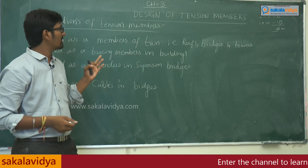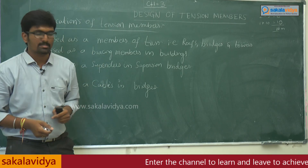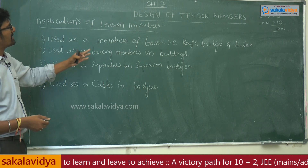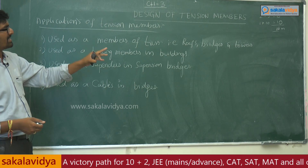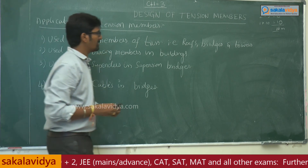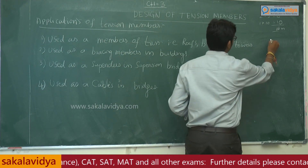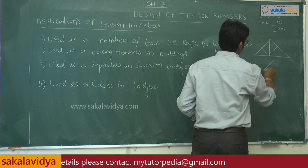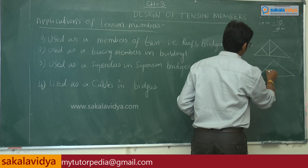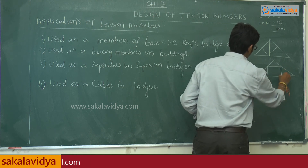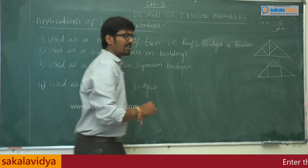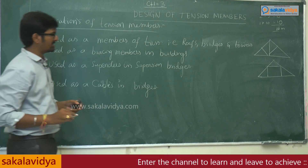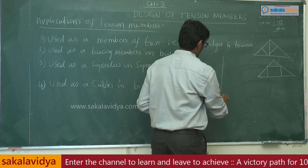The first application of tension members is that they are used as members of truss elements — in roofs, bridges, and towers. This is an example for your truss. The second application is that tension members are used as bracing members in buildings, for example in long span structures.